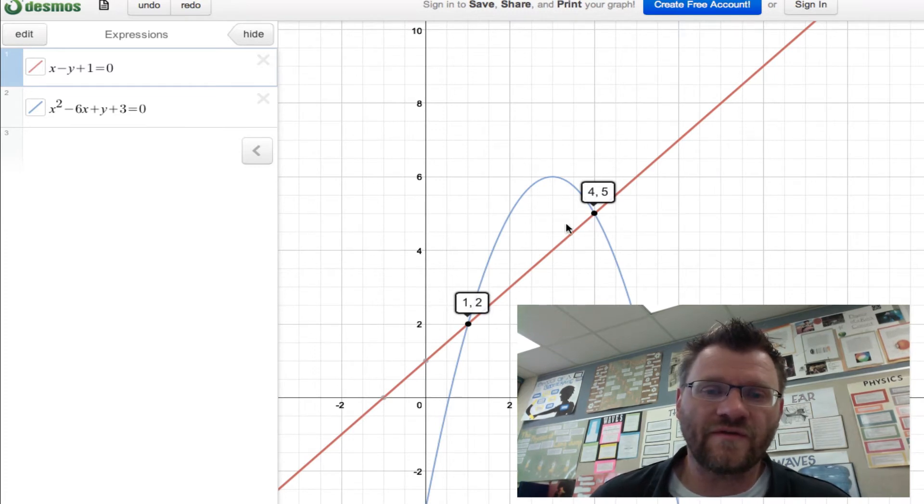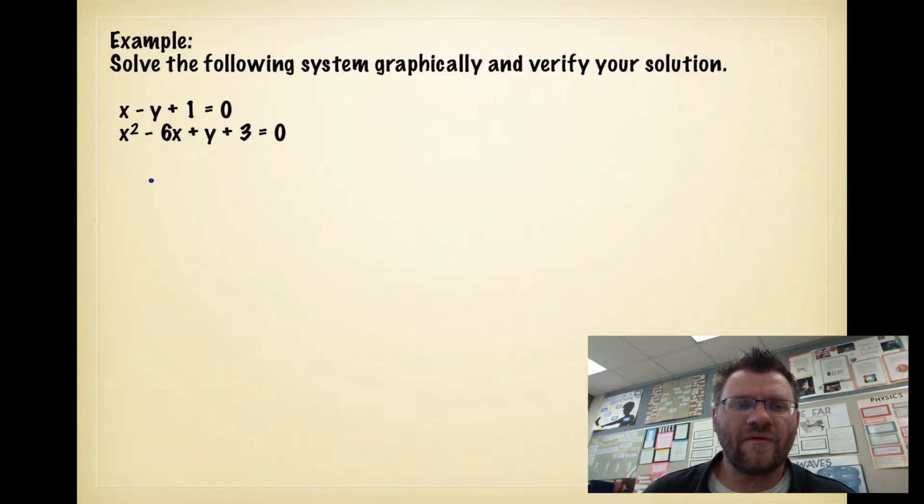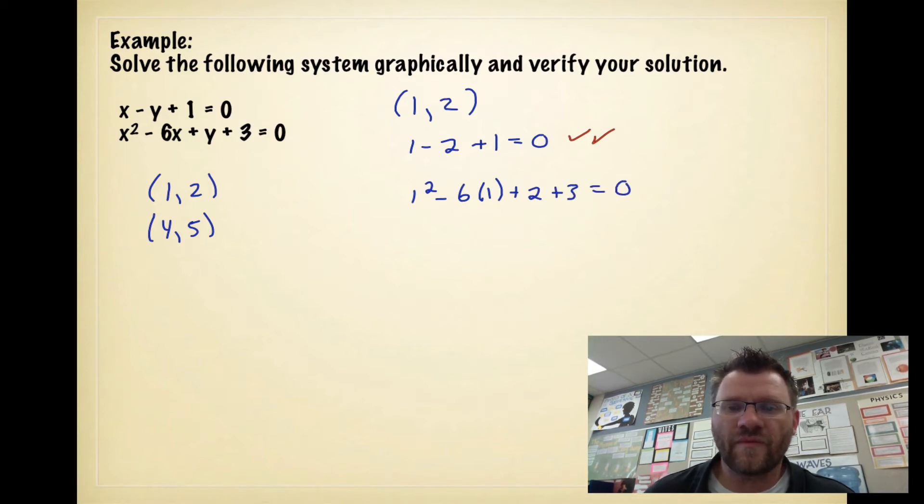It also asked us to verify these solutions. So we're going to have to do that by plugging in both these values into both these equations and making sure that the left-hand side equals the right-hand side. Here we're going to verify our solutions. We've got 1, 2 and 4, 5 as our two points. So I'm going to plug 1, 2 into my first equation and my second equation. When I do that, I get 1 minus 2 plus 1 equals 0. Well, that checks out. And then I get 1 squared minus 6 times 1 plus 2 plus 3 should equal 0. I get 1 minus 6 plus 2 plus 3. Well, that's 1 plus 2 plus 3 is 6, minus 6 should give me 0. And it does. So both these equations check out.